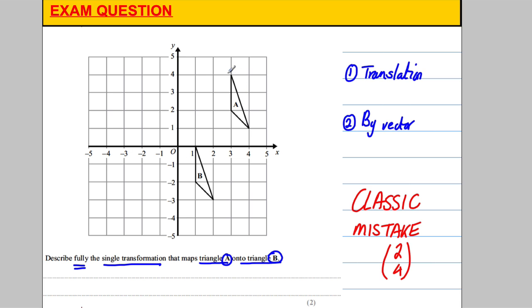Picking a corner, it's one, two to the left, so it's by vector negative 2. Then it's one, two, three, four down: negative 4. To avoid that mistake, remember we're going from A, the object, to B, the image. Thanks for watching, hope you found this video useful.